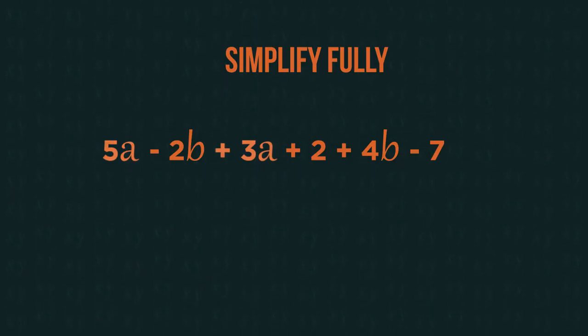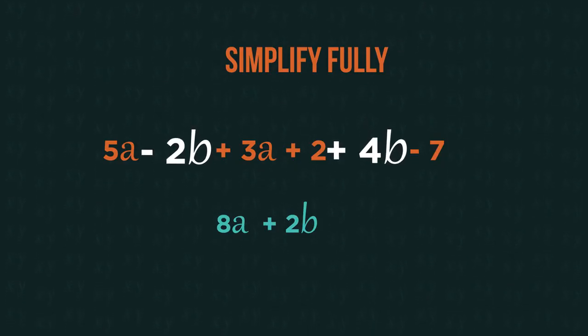So we can combine the a's to get 8a. Then the b's, including the sign in front of each term, to get positive 2b. And finally, the numbers to get negative 5. We cannot combine different letters, so this is the simplest form. This expression might represent 8 apples and 2 bananas, which are completely different things, so we can't combine them.